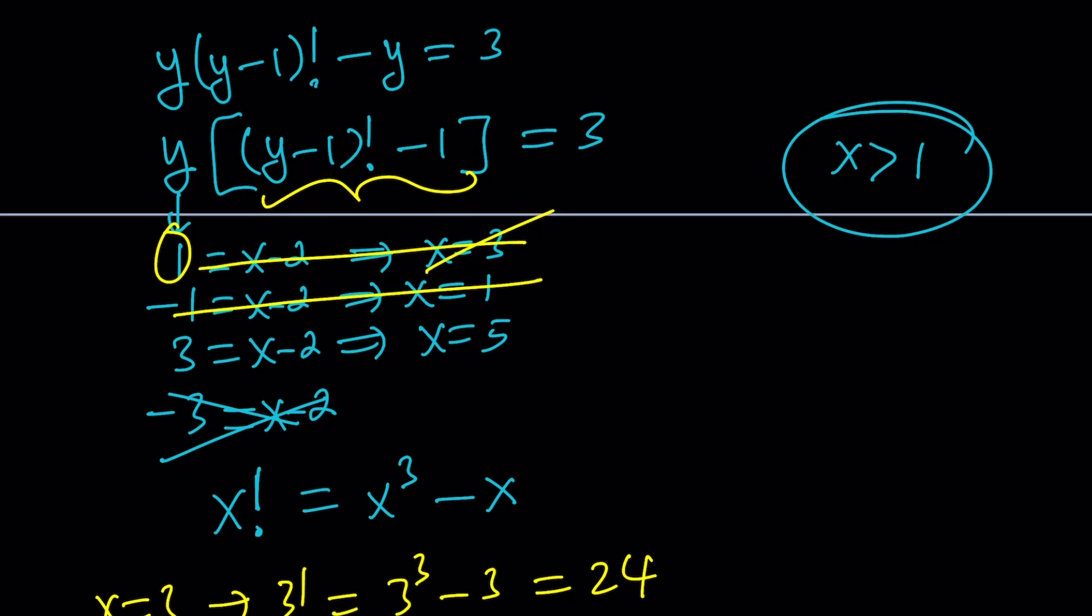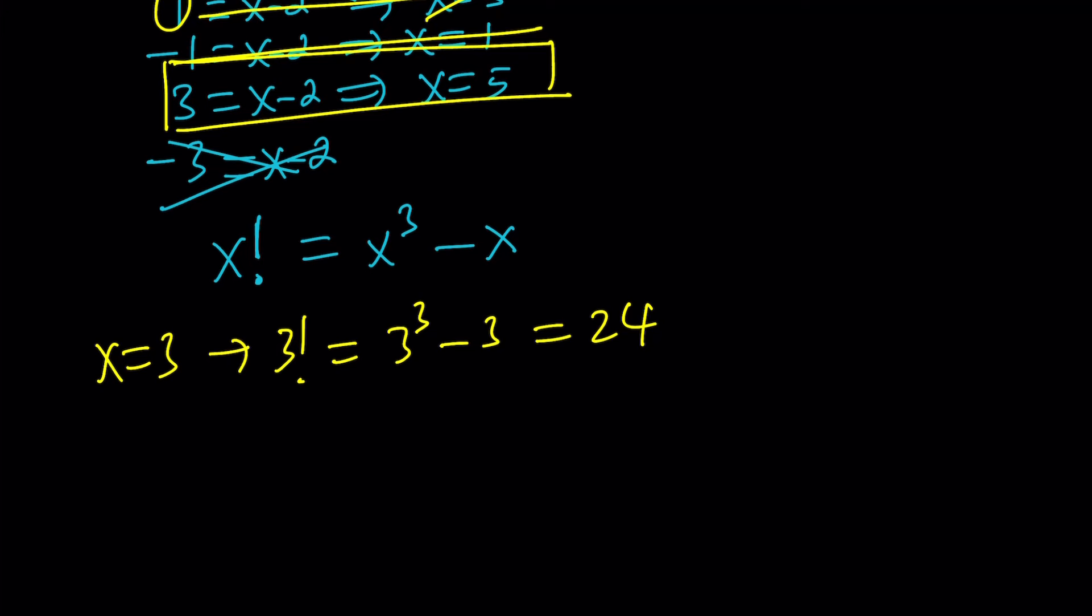So we end up with the only possibility, x equals 5. And does that work? Hopefully, it does. Otherwise, our equation has no integer solutions. It has real solutions, but not integer solutions.